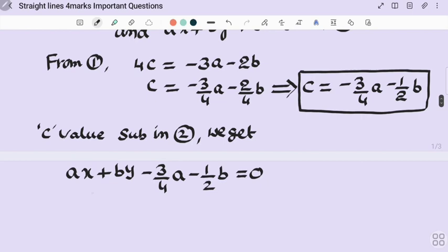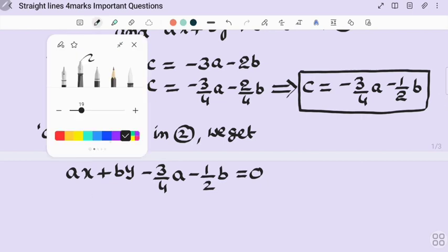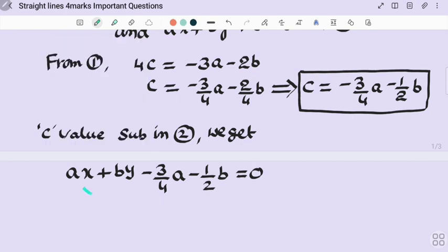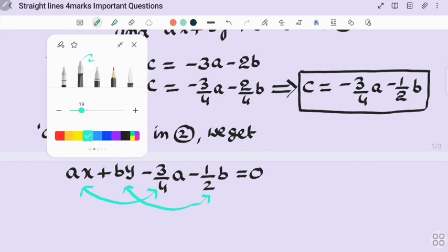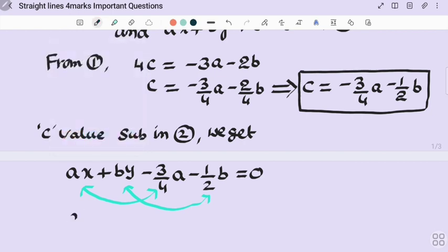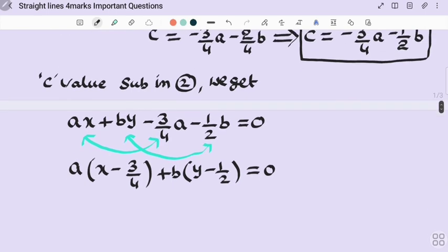After that, the terms containing a, the terms containing b, from these two a take common, from these two b take common. So a(x - 3/4) + b(y - 1/2) = 0.